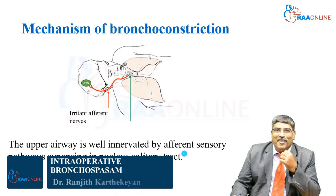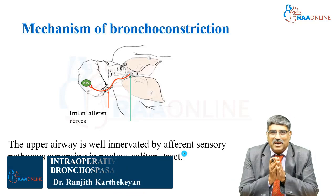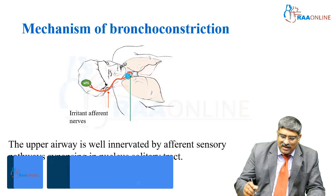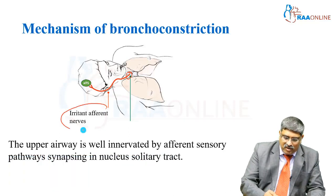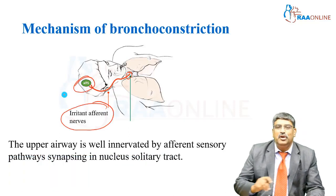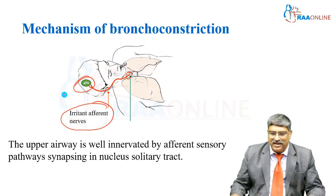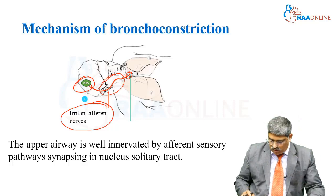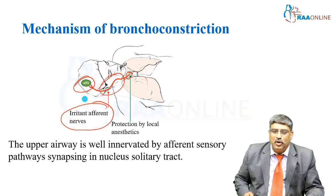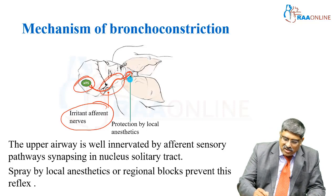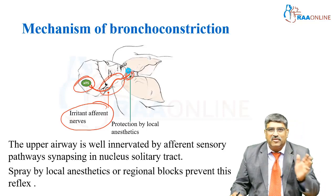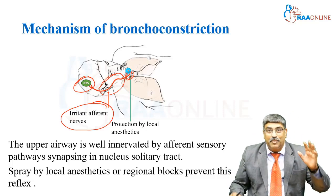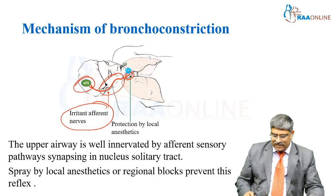Coming to the mechanism of bronchospasm in the perioperative period. The airway is innervated by many sensory afferent nerves which go to the nucleus tractus solitarius. You have to interrupt this tract to prevent bronchoconstriction. For example, infiltration of local anesthetic prevents nerve conduction, or you can give regional blocks around the airway to prevent this reflex bronchoconstriction.